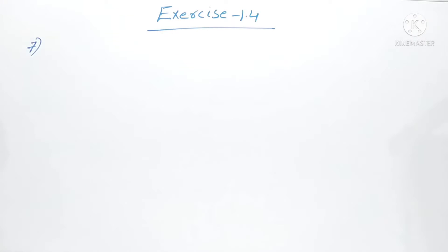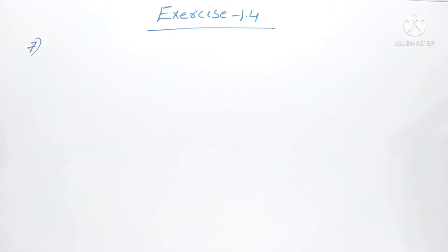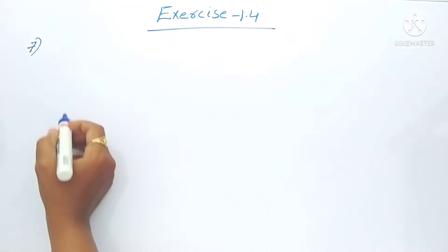Hello students, welcome to my channel. Today we will solve our seventh problem in exercise 1.4. The problem is: find the value of (√7 - √5) / (2√2) up to 3 decimal places.